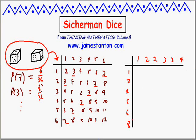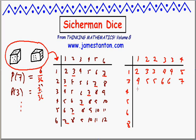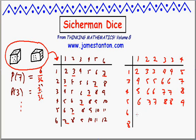Let's look at the sums you get from these strange Sicherman dice. 1+1=2, 1+2=3, then 3, 4, 4, 5. Next: 4, 5, 5, 6, 6, 7. Then 5, 6, 6, 7, 7, and 4+4=8. Next row: 6, 7, 7, 8, 8, 9. Then 7, 8, 8, 9, 9, 10. And finally 10, 10, 11, 11, 12.